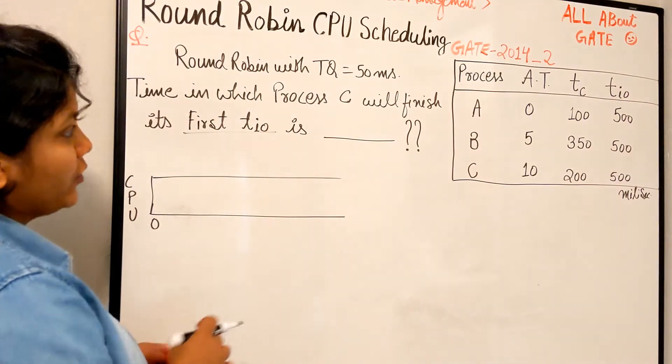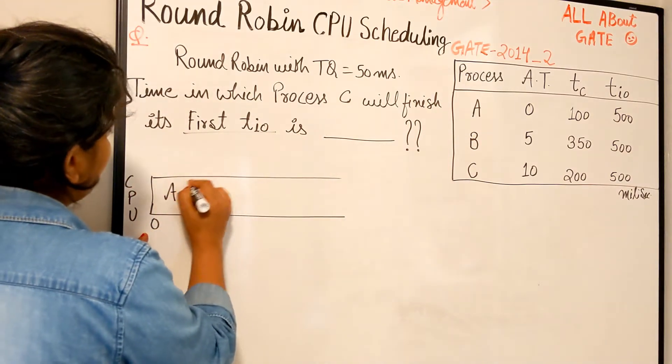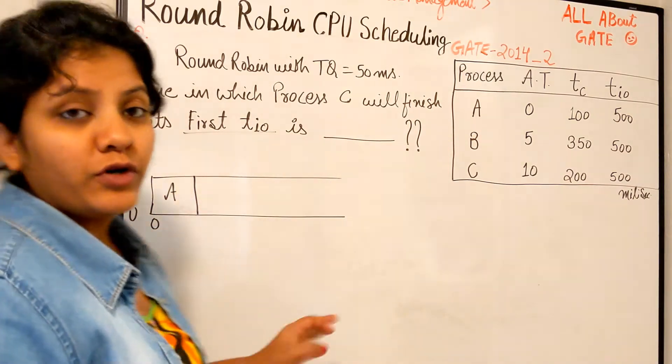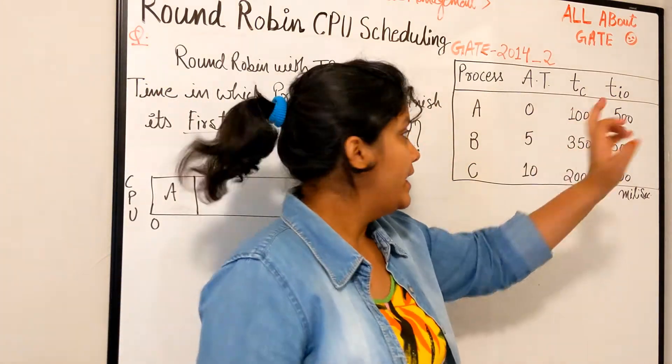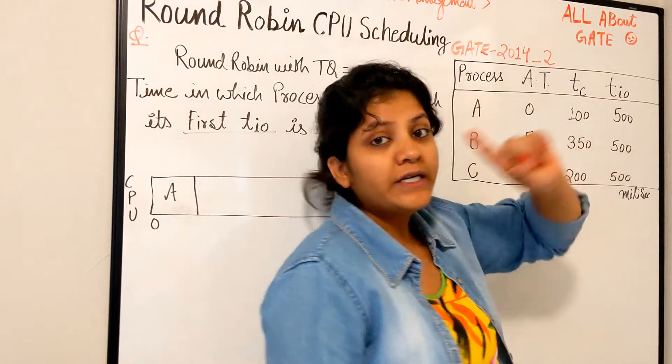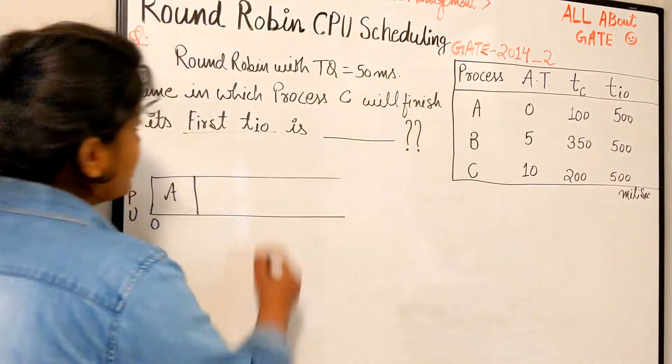So let's start doing that. At very first time 0, I have process A, so process A is scheduled. And of course, first of all, it is going to perform its TC completely, then only it will go for its TIO. So that is important, right?